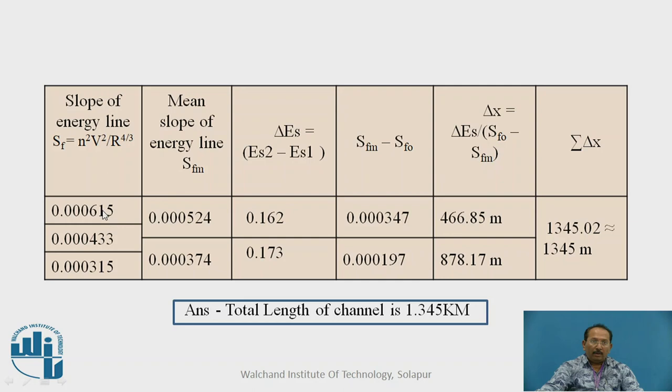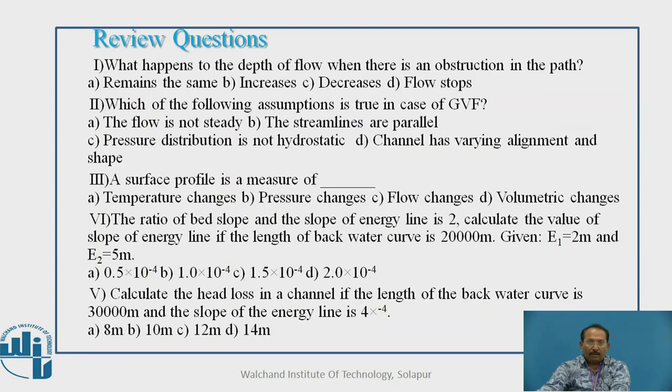Then mean slope, you are going to take this slope first and average of these two here and average of these two here. Then Es2 minus Es1, find out Es2 minus Es1, it is 0.162, 0.173. Sfm minus Sf0, these values and finally delta x is equal to Es2 minus Es1, that is here upon Sf0 minus Sfm. Delta x, it is 1345 meters. Like this, we can go for any channel section.